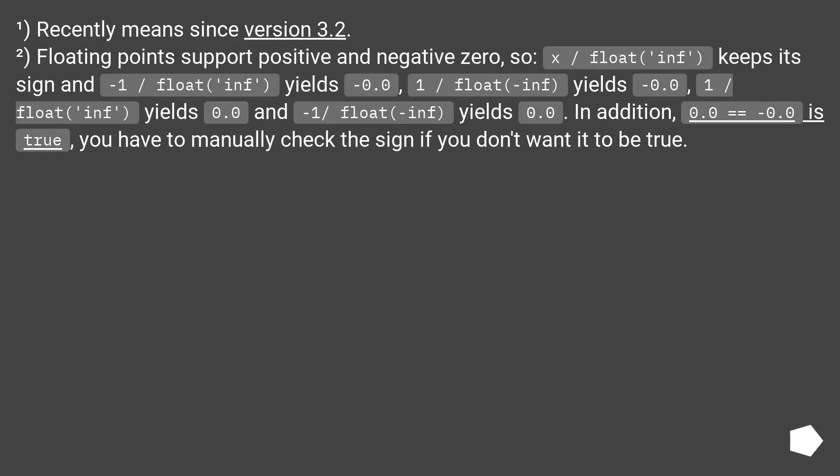Superscript 1, recently means since version 3.2. Floating points support positive and negative 0, so x divided by float inf keeps its sign. Minus 1 divided by float inf yields minus 0.0, and 1 divided by float inf yields 0.0. In addition, 0.0 equals equals minus 0.0 is true. You have to manually check the sign if you don't want it to be true.